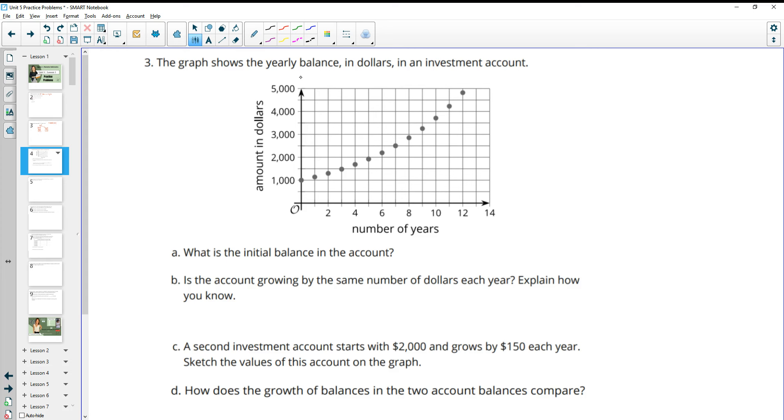Number 3, the graph shows the yearly balance in dollars of an investment account. What is the initial balance of the account? The initial balance is at time of 0, and we can see that we're here at $1,000.